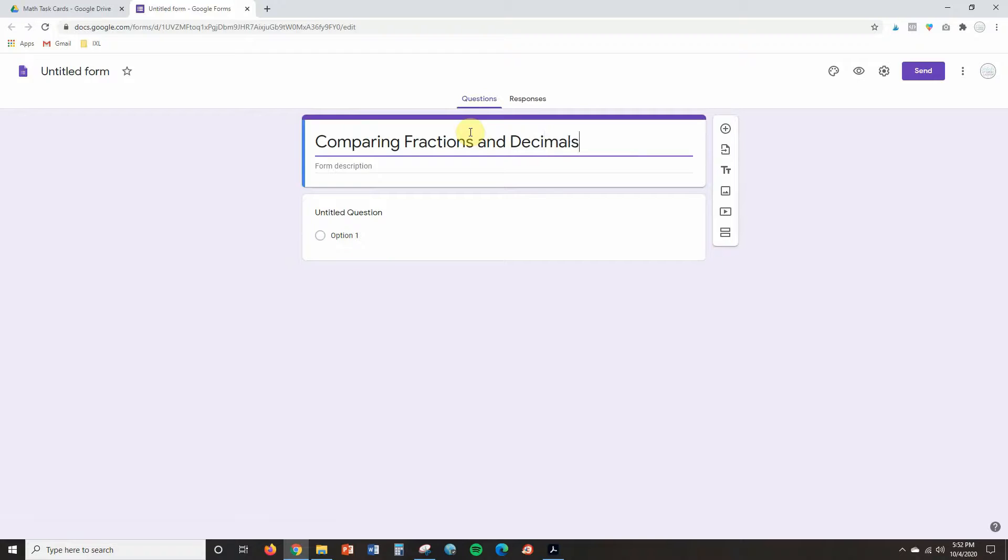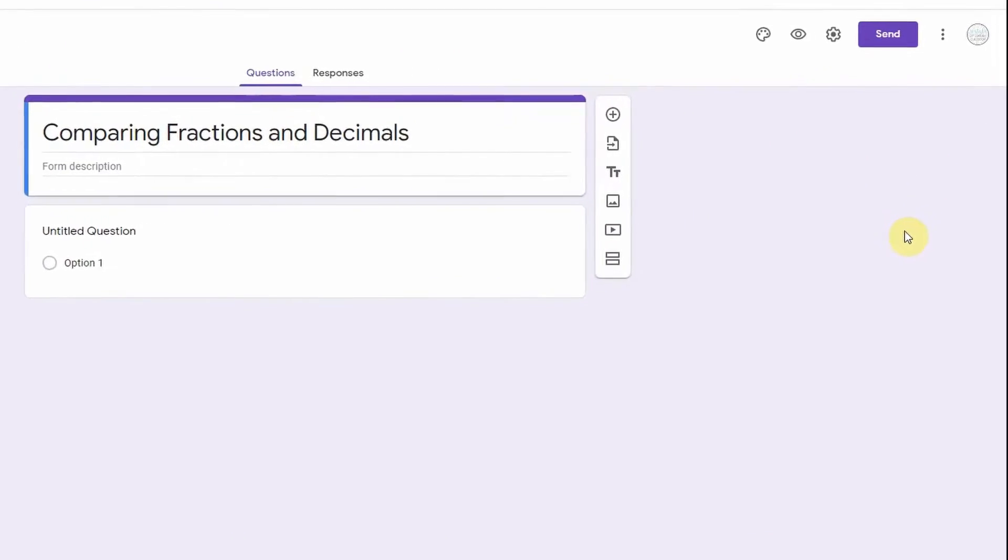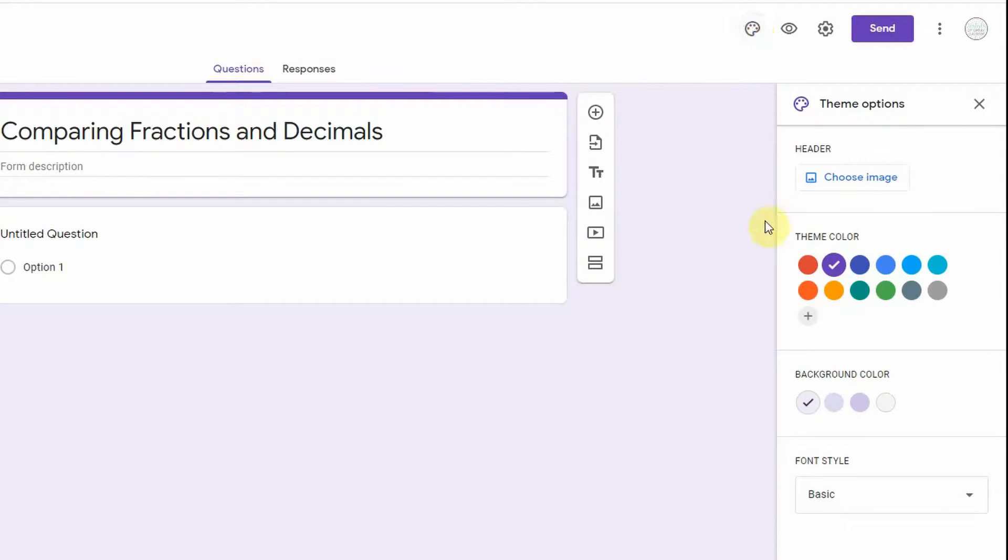And then usually what I like to do is I like to change the background color to something that's gonna go along with what's on the task card. So those task cards had yellows and oranges and pinks so I think this one could be a fun one. You can also add a header to the top.